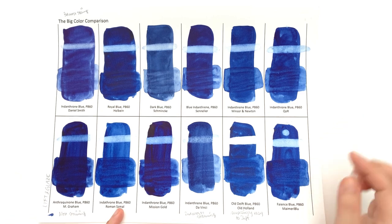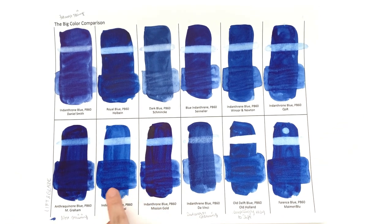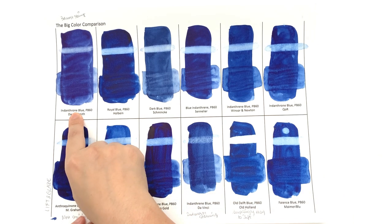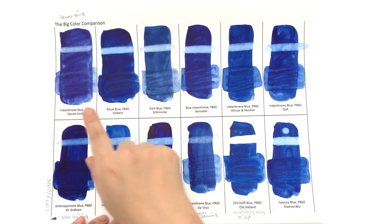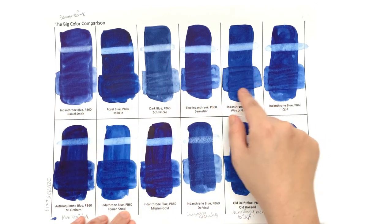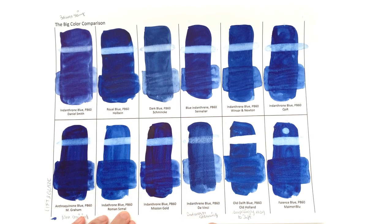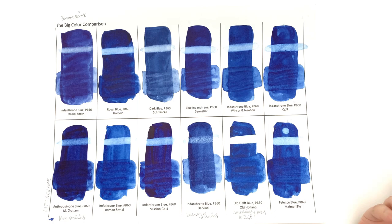I would recommend M. Graham. Roman Szmal is pretty good - it's very even, at least, which, you know, apparently that's a hard thing to get in Indanthrone Blue. I would say Daniel Smith is pretty decent. You at least don't get this very weird square outline, so maybe M. Graham, Daniel Smith, and Roman Szmal if you do a lot of glazing.